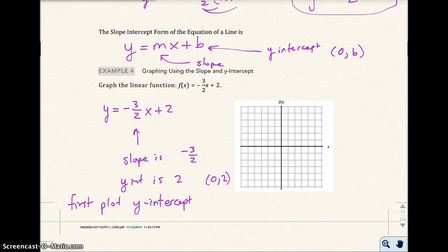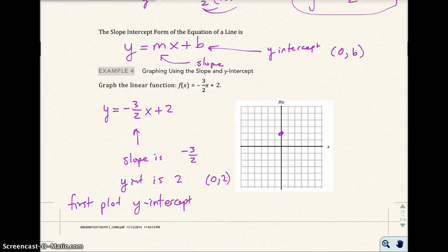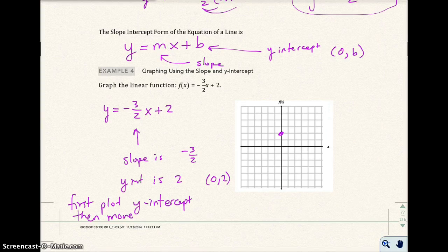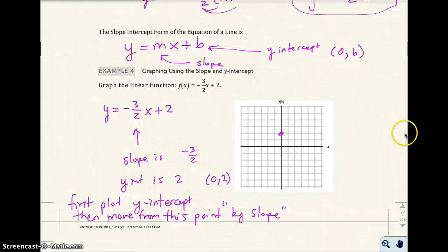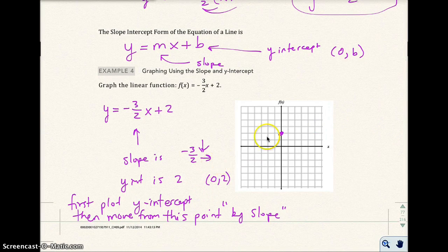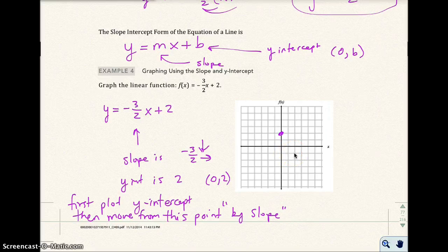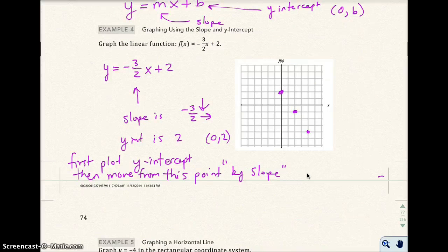This is going to be your slope. So slope is -3 over 2. The y-intercept is 2 or (0, 2). Okay. So first, we're going to graph the y-intercept or plot the y-intercept. We get this point right here. Then we're going to move from this point by the slope. Remember, slope tells me how to get to another point on the line. So this tells me down 3 to the right 2. So from here, I'm going to go down 1, 2, 3, and to the right 2. That point would be right there. So that would be the line. We're graphing that linear function.